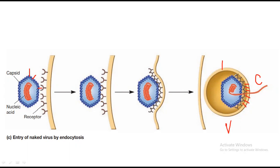The second mechanism for naked virus entry is that the naked virus can rupture the plasma membrane. The capsid of the naked virus consists of special molecules and proteins that can break and tear the plasma membrane apart, and the whole capsid enters the cytoplasm directly. These mechanisms were not shown in the diagram but should be kept in mind.